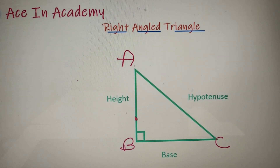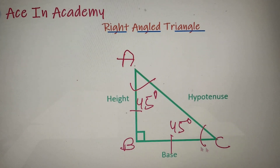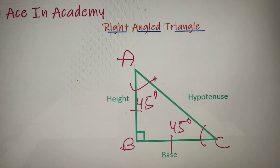If the height and the base of a right-angled triangle are equal, then angle A is equal to angle C and both are equal to 45 degrees. You can verify this by taking both angles as x, so 2x equals 90 degrees, which gives x equal to 45 degrees.